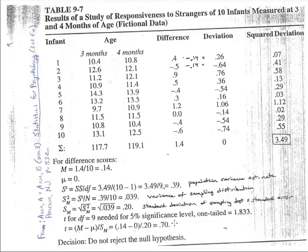We compare that t-calculated to a t-critical based on 9 degrees of freedom (since we have 10 subjects). We use an alpha of 0.05 and a one-tailed test, because we want to see if four-month-old children did better on responsiveness to strangers than three-month-olds. The t-critical for alpha = 0.05, 9 degrees of freedom, one-tailed, is 1.833. Since our t-calculated of 0.7 is less than the t-critical of 1.833, we do not reject the null hypothesis.